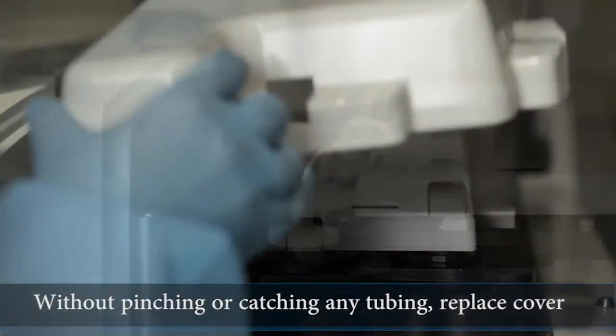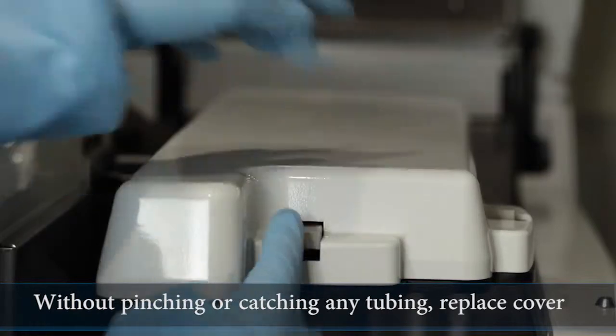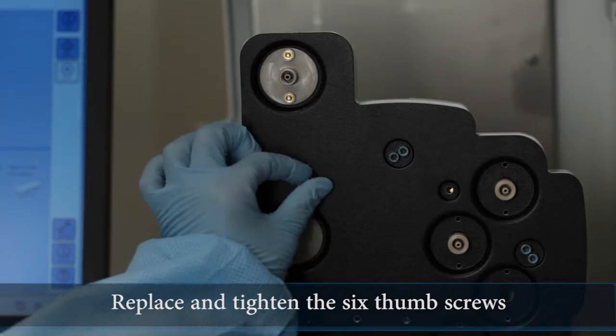Being careful not to pinch or catch any tubing, place the manifold cover back in position, lift the manifold while holding the cover in that position, and replace and tighten the six thumb screws.